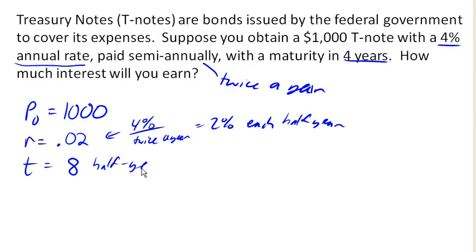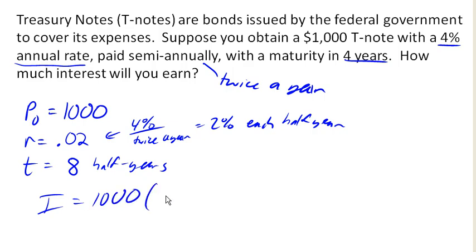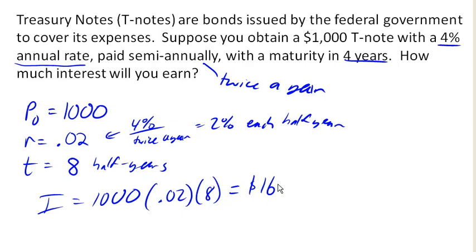That's going to let me calculate my interest. My interest is $1,000 earning 2% each half year for 8 periods, which gives me a total of $160 in interest.